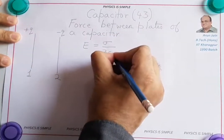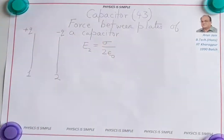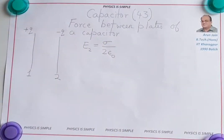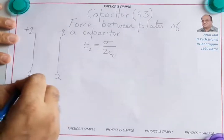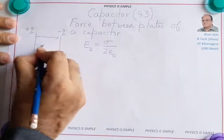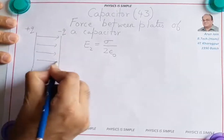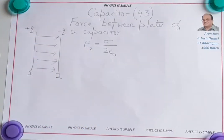This is the electric field due to plate 2 alone. So plate 2 will create an electric field sigma by 2 epsilon naught here. The magnitude of the electric field will be given by sigma by 2 epsilon naught and the direction will be like this.